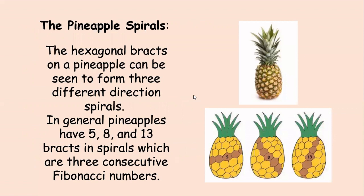Now let's see some pineapple spirals. The hexagonal bracts on a pineapple can be seen to form three different directions of spirals. In general, pineapples have 5, 8, and 13 spirals, which are three consecutive Fibonacci numbers. So you can go get a pineapple and look for yourself — see how many you can find.